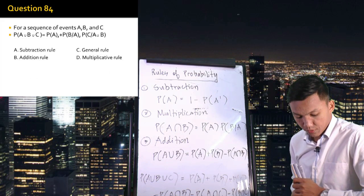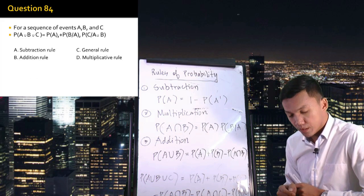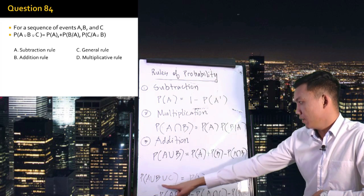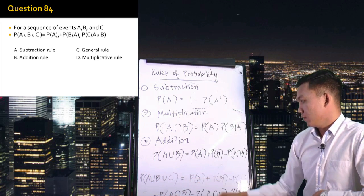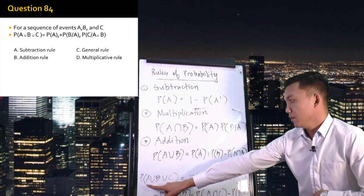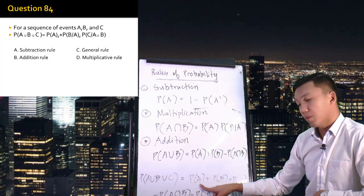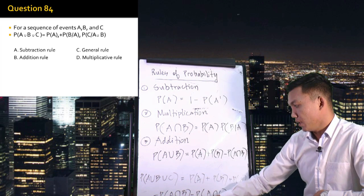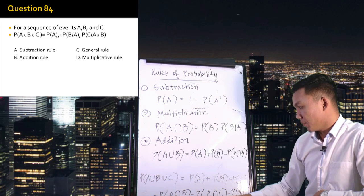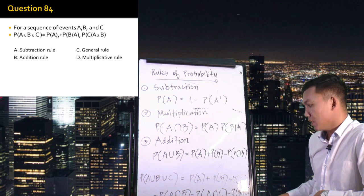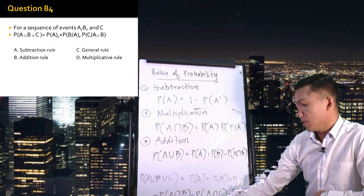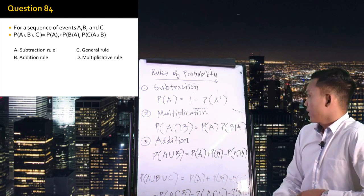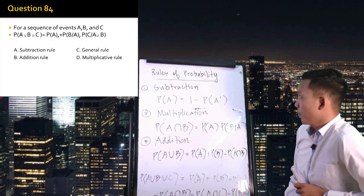Number 84: For the sequence of events A, B, C — P(A∪B∪C) is equal to the probability of A plus the probability of B plus the probability of C, minus the probability of A and B, minus the probability of A and C, minus the probability of B and C, plus the probability of A, B, and C occurring at the same time. These are your general rules of probability.